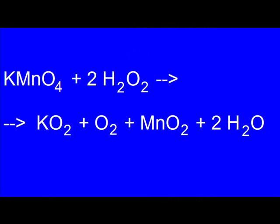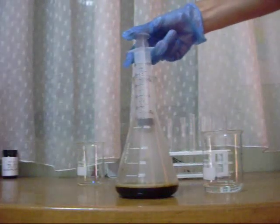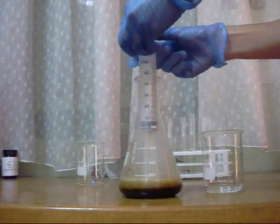Potassium permanganate reacts with hydrogen peroxide, yielding potassium superoxide, oxygen gas, manganese dioxide, and water. The reaction is almost complete now.